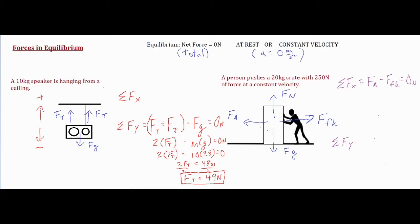What I typically do for positive and negative is everything that is trying to help the object move is positive and anything that's opposing it is negative. So my FA I called positive — everything in that direction — and then the force of friction is negative. Technically you could have everything to the right being positive and everything to the left being negative. It really doesn't matter as long as your different signs are in opposite directions. So from there, you would have FA equal to 250 newtons minus your force of kinetic friction equals zero newtons. Depending on the problem you might have to break down the force of kinetic friction into mu times normal force and then solve for the coefficient of kinetic friction.